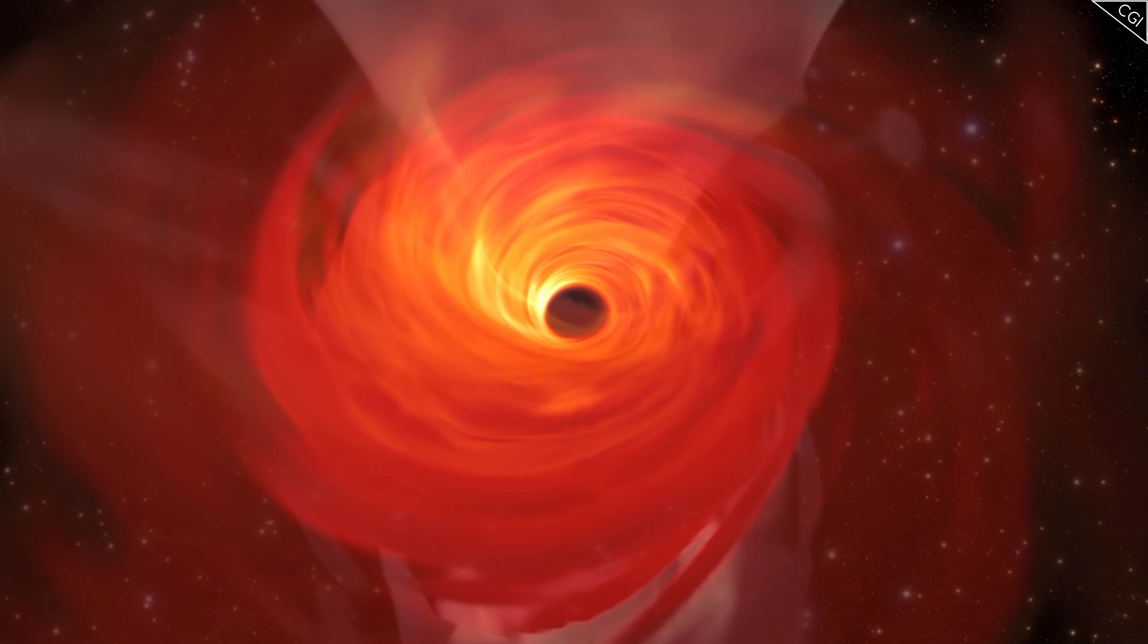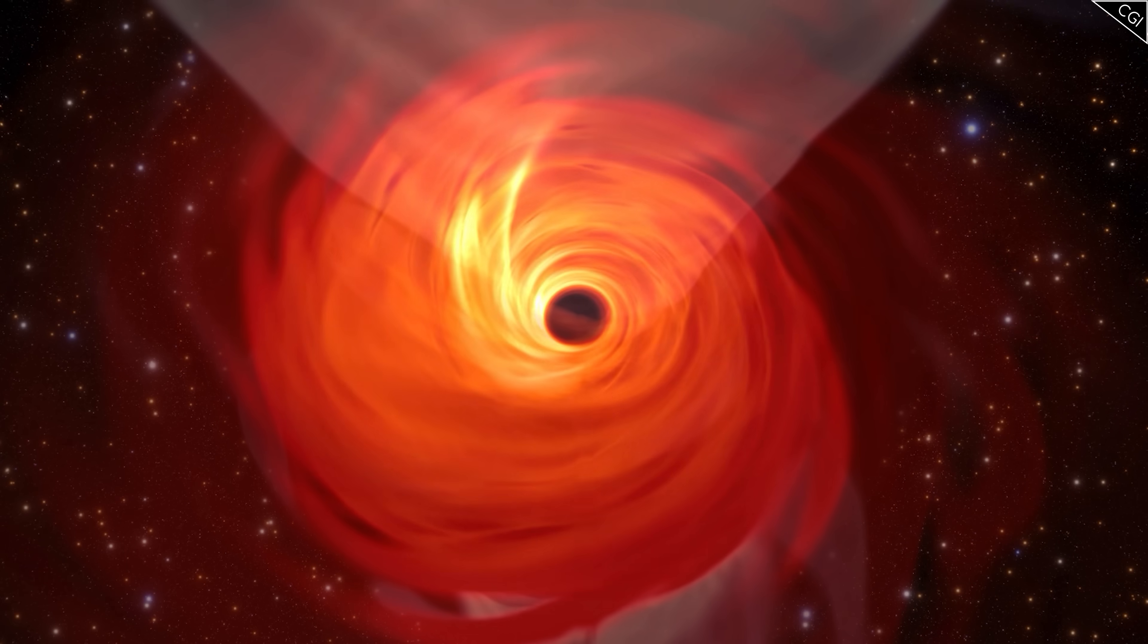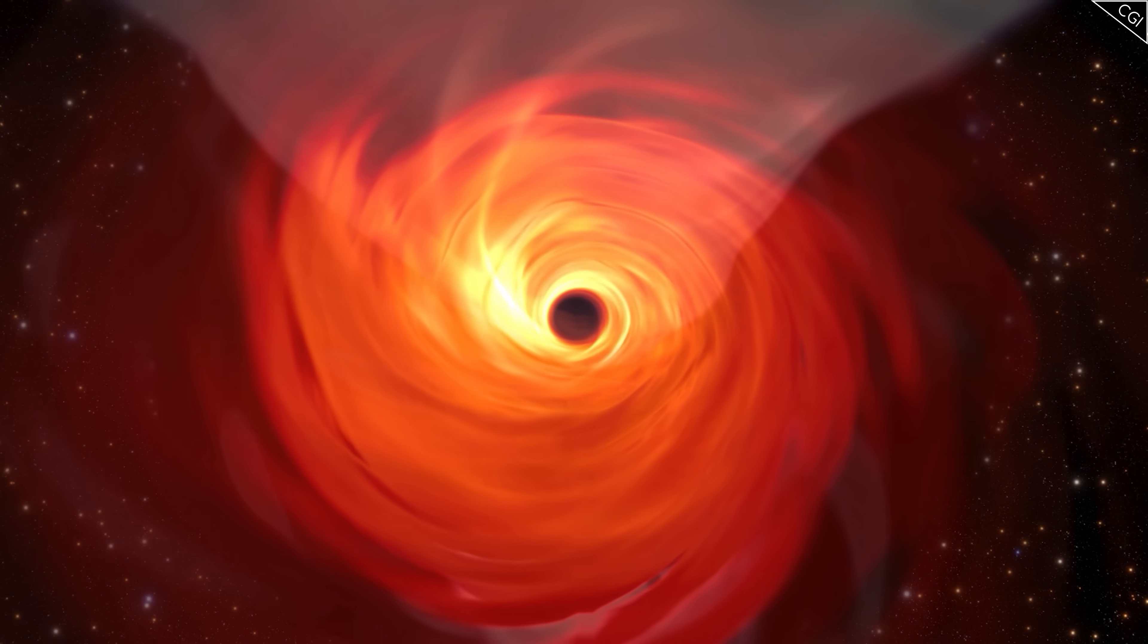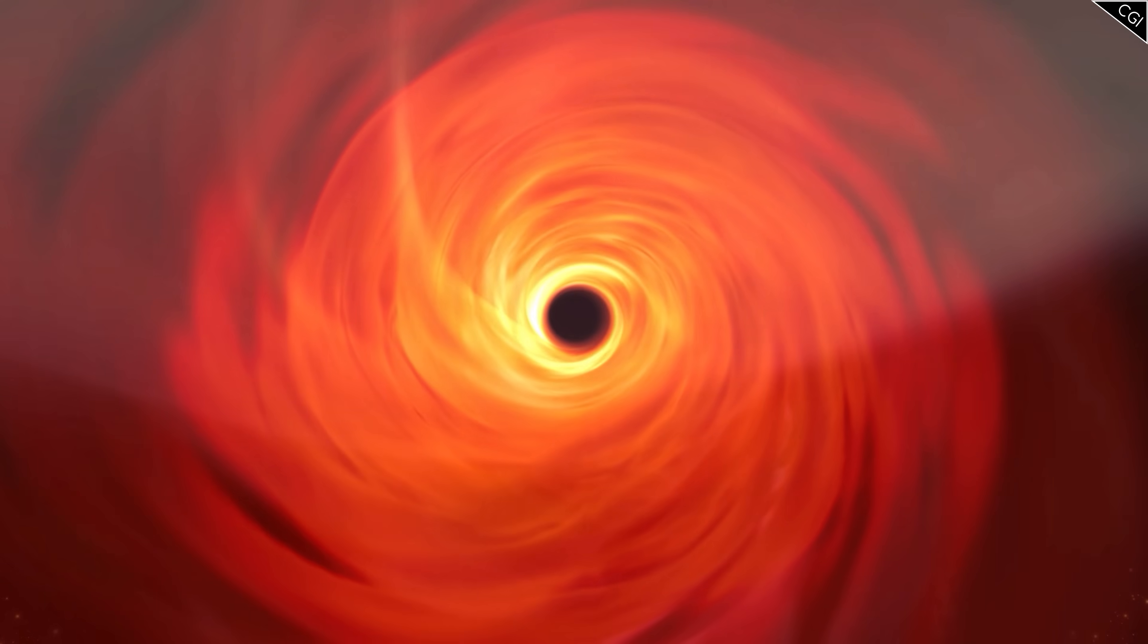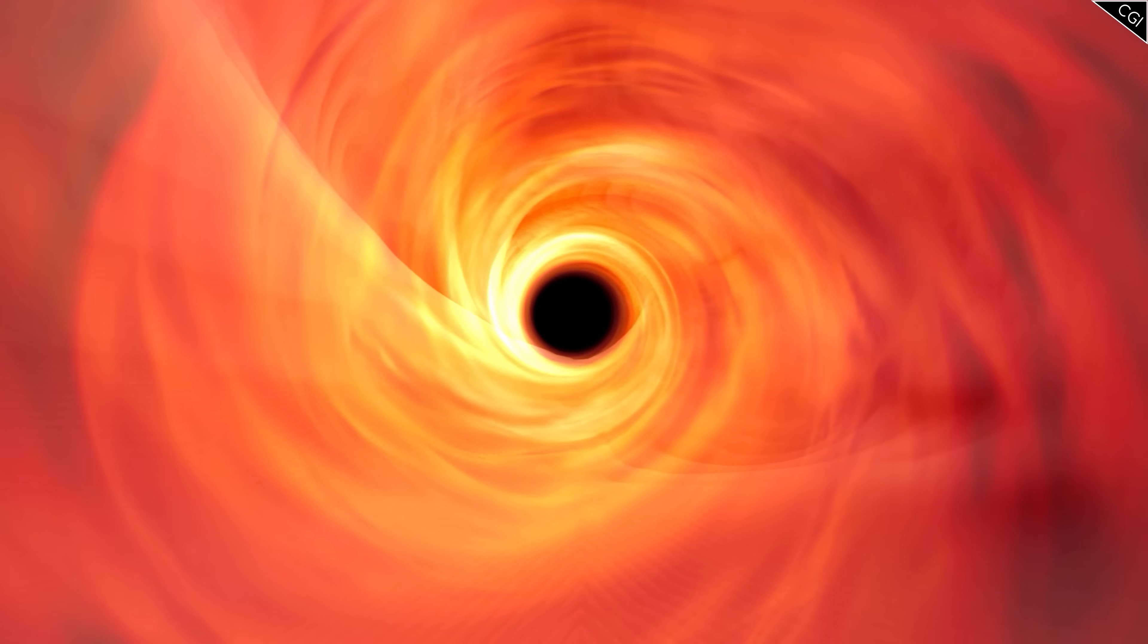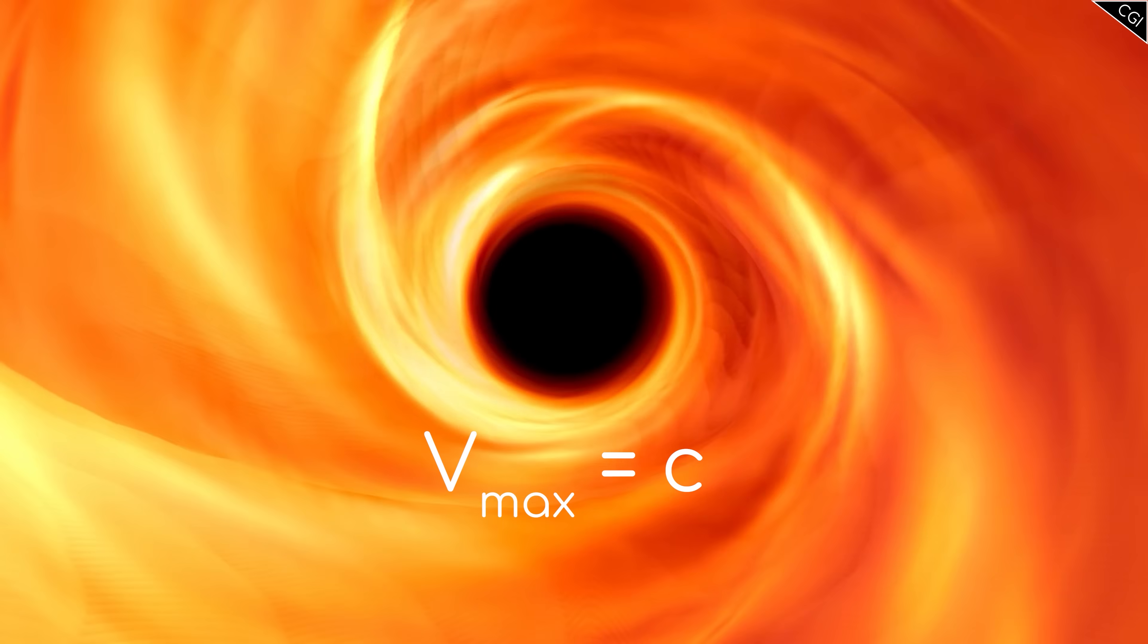So what happens to our spinning matter as it falls further and further into the black hole? Due to the massive forces and curvature involved, it eventually reaches a point where it cannot go any faster, it's hit a roadblock. And because it cannot spin faster, it cannot fall further into the black hole.